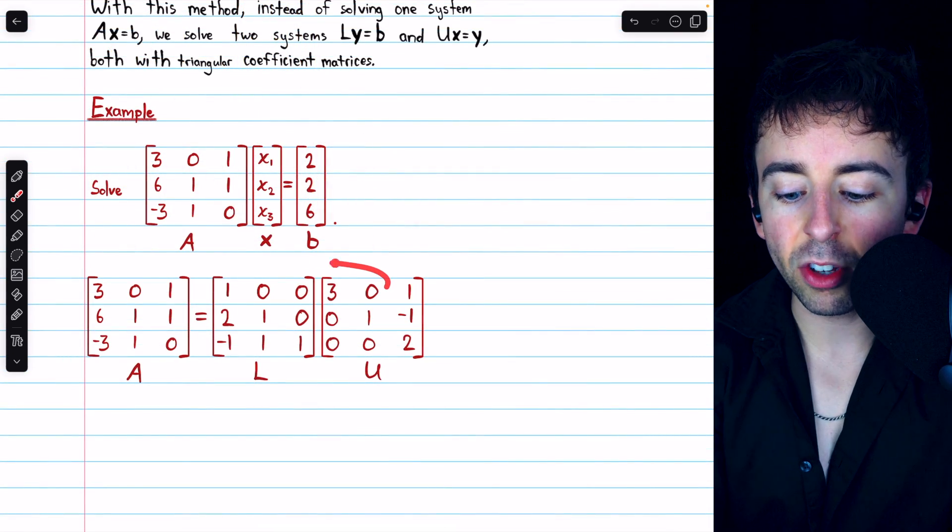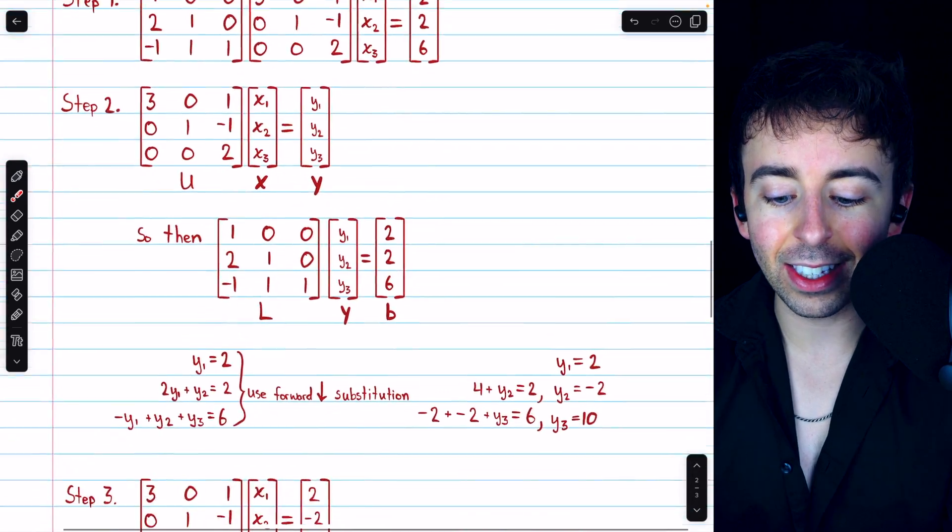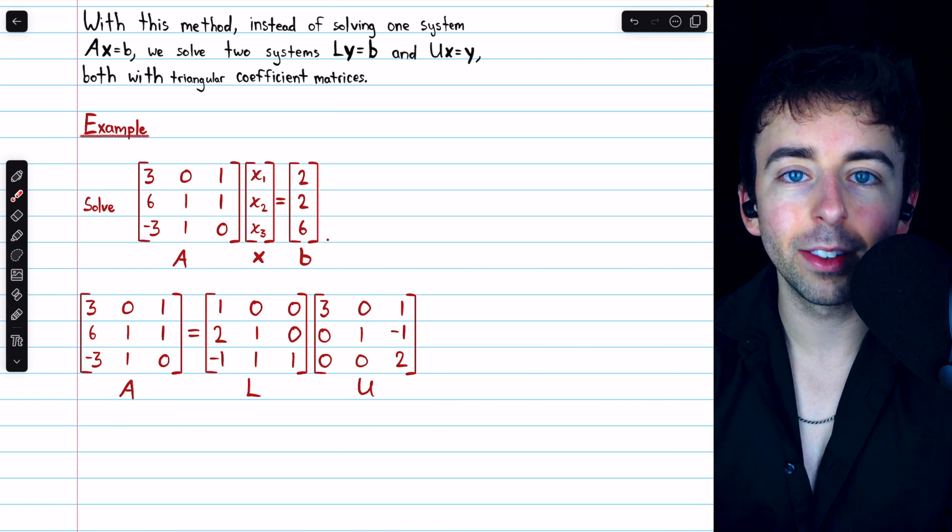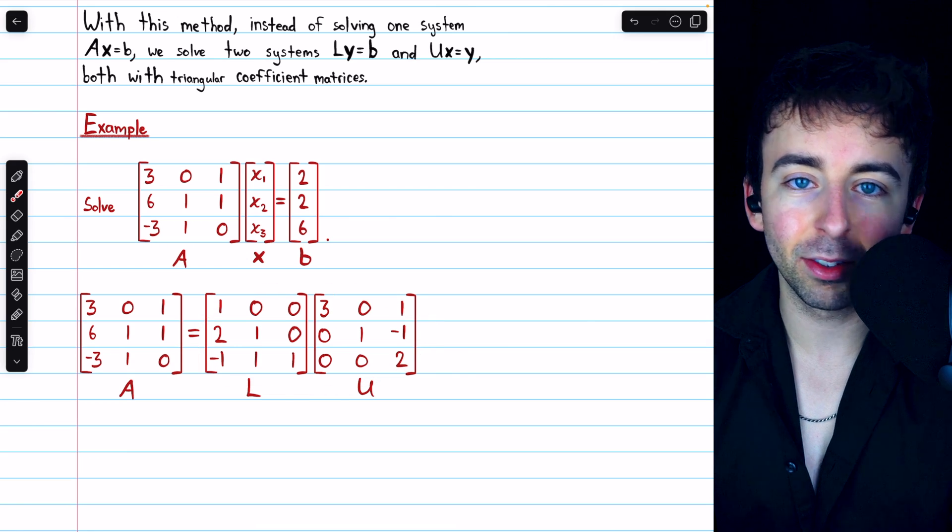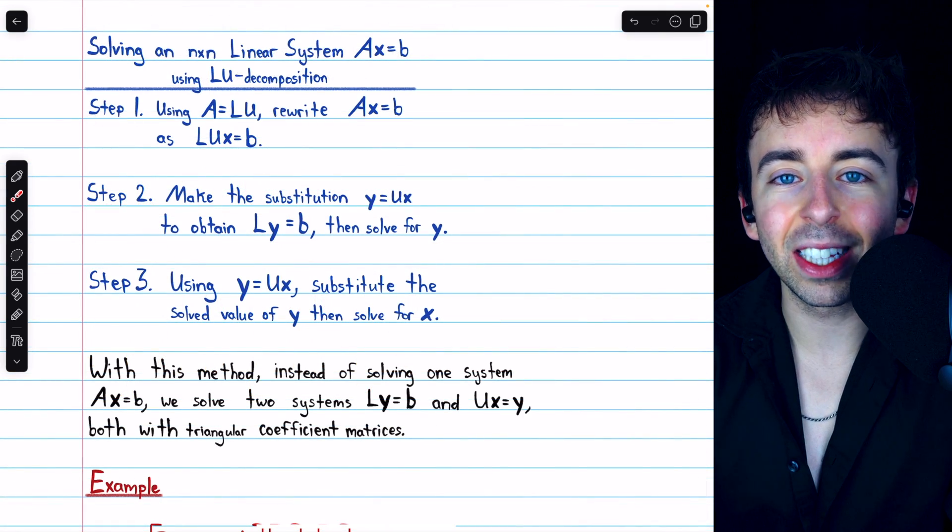The advantage of this method is once you have the LU decomposition, you can use it to easily solve these systems, no matter what the constant vector is. So if we had a different constant vector, we could again use this decomposition and solve the system very easily. So that's the LU decomposition method for solving linear systems.